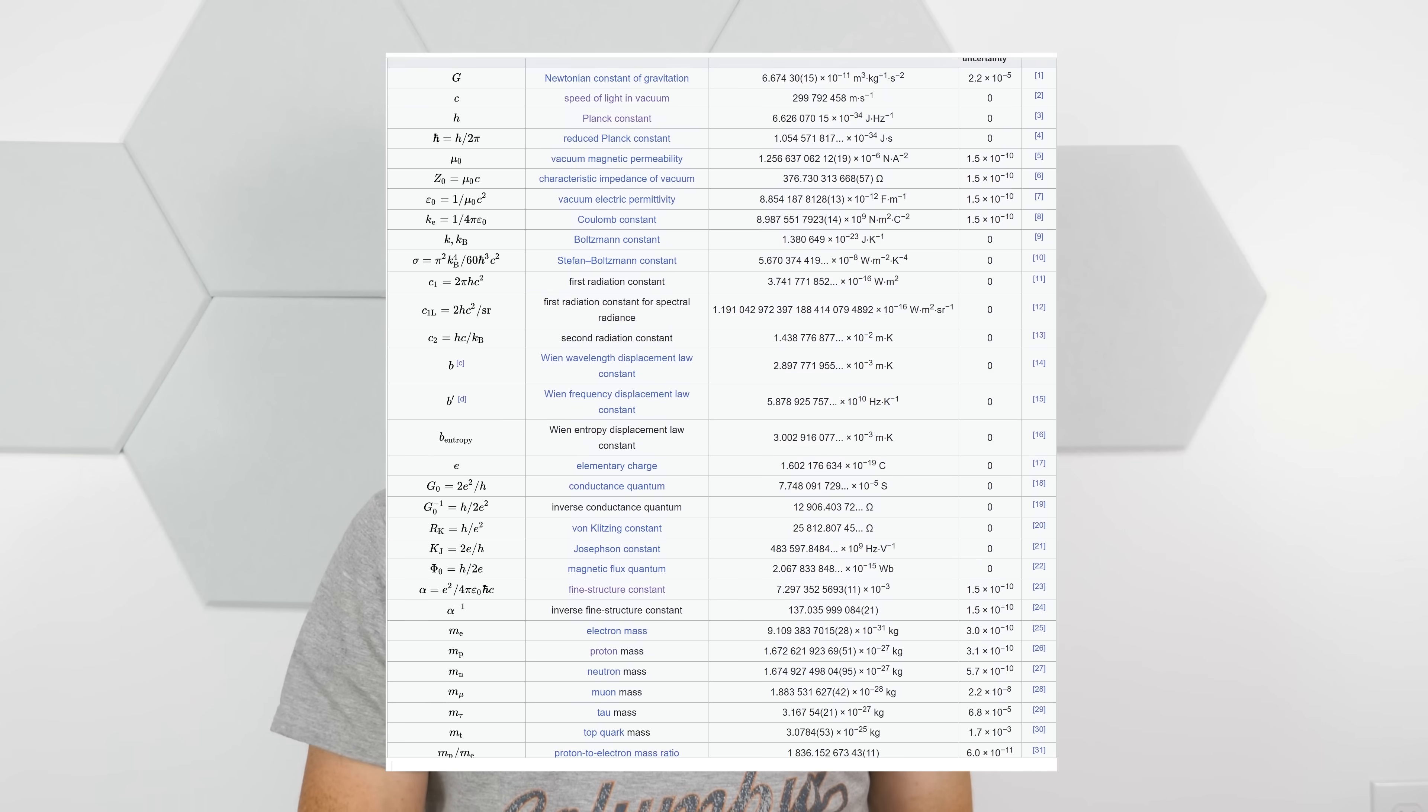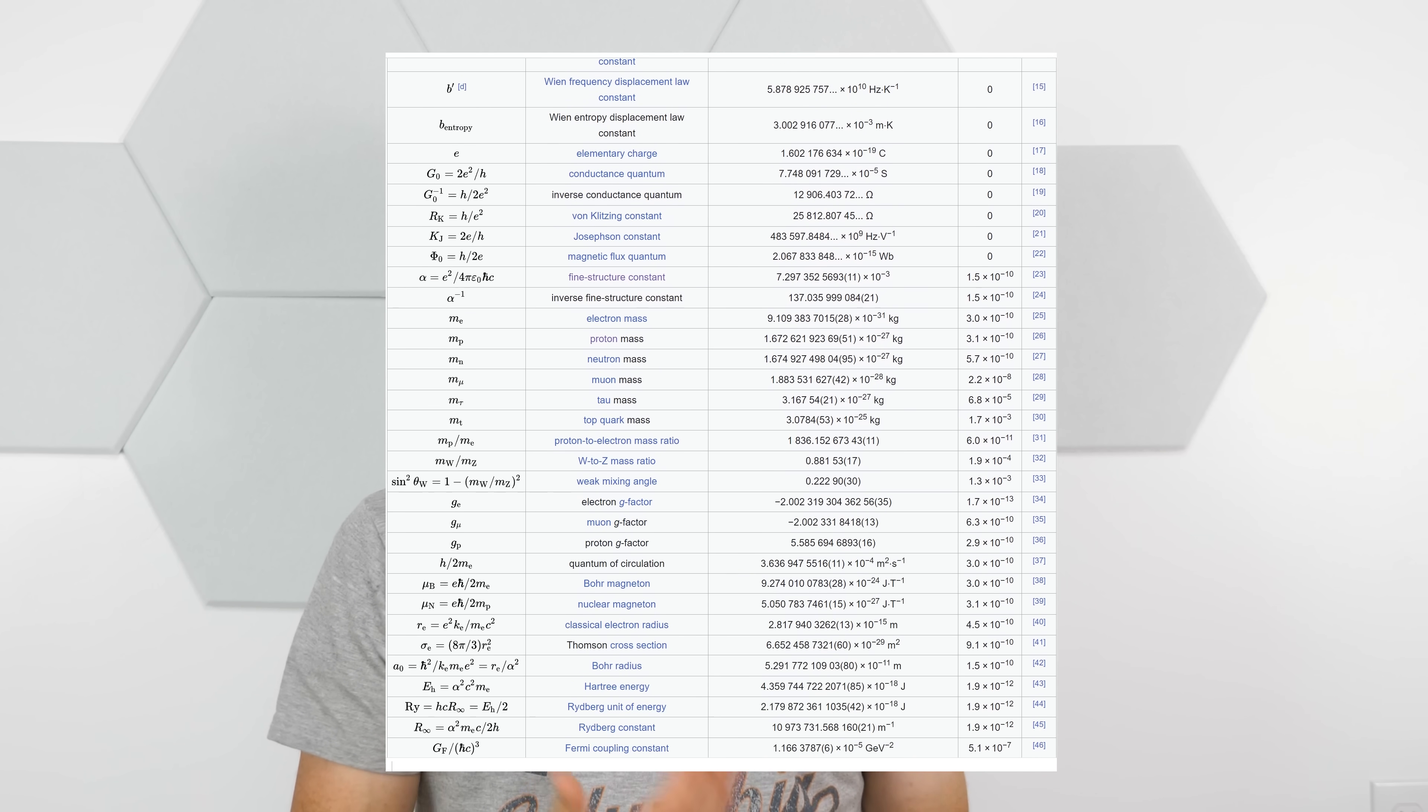There are about 26 of these constants. They include things like the speed of light, the rest mass of an electron, Planck's constant, the charge of an electron, the electric constant, and so on.